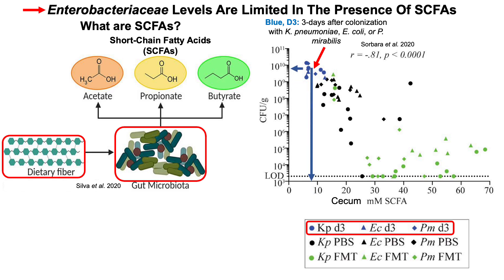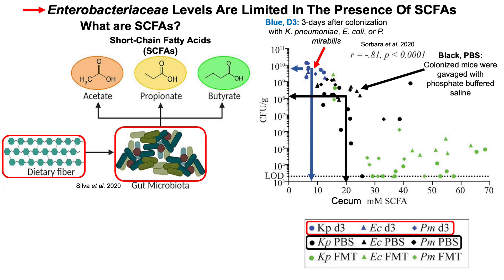Mice colonized with enterobacteria had very high levels — around 10 to the 10th colony-forming units per gram. The mice were then divided into two groups. One group was force-fed PBS — phosphate-buffered saline — which may have washed away some bacteria and allowed growth of short-chain fatty acid-producing bacteria. We can see a reduction in enterobacteria relative to baseline, and short-chain fatty acid levels are higher, almost double.